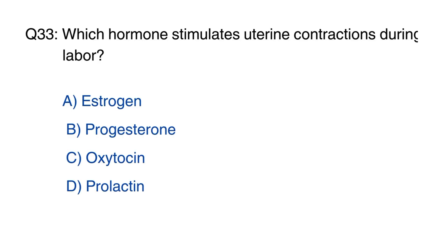Question 33: Which hormone stimulates uterine contraction during labor? The right option is option C, oxytocin.